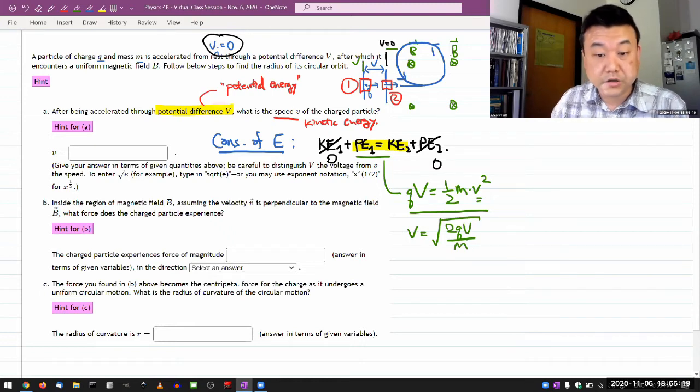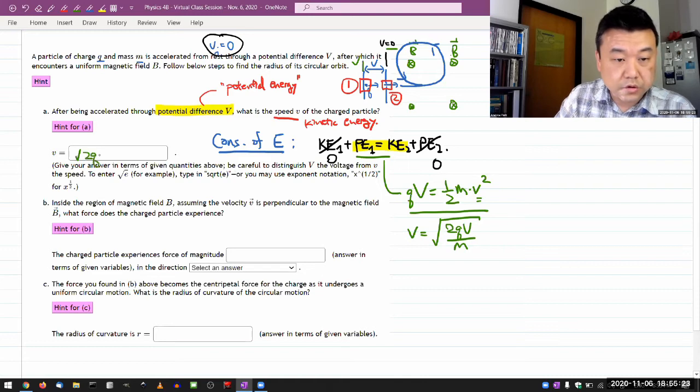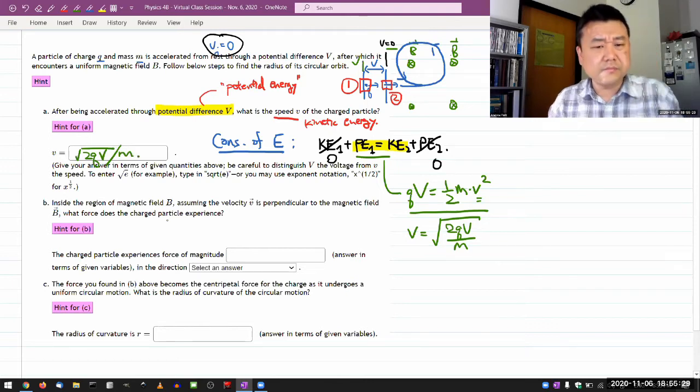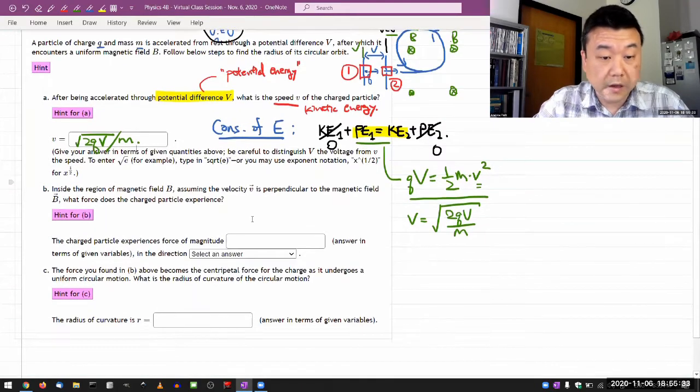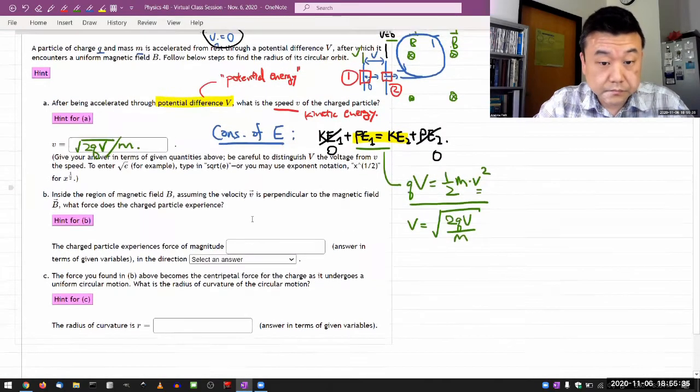So that should be the answer. Square root of 2q capital V over m. Oh yeah, and I guess this is an algebra thing.